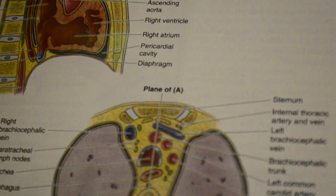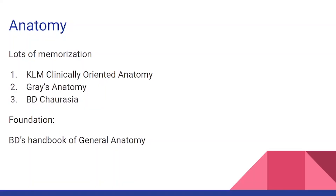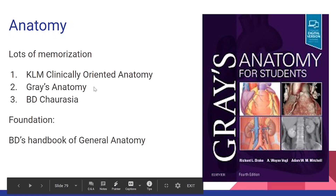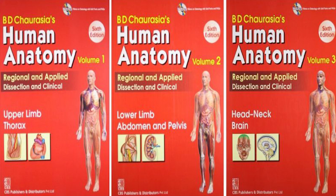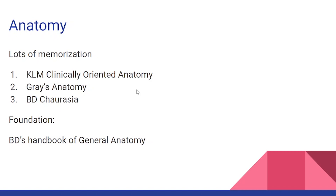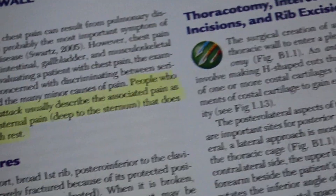The thing with anatomy is you have to figure out for yourself what book fits you, because people will tell you KLM is the best, Grays is the best, BD is the best. What you have to do is look through a page, a paragraph, or a concept in each book and see which one helps you understand it best. I went straight to either KLM or Grays because BD, in my opinion, is pretty much hell — though for some people it works. I felt KLM was really good because it incorporates a lot of clinical aspects into the anatomy.